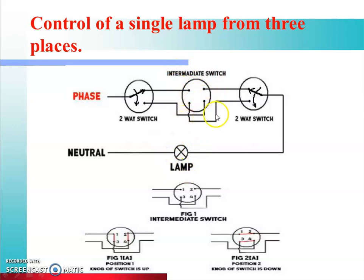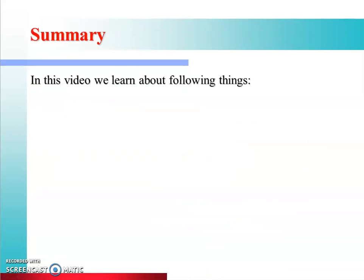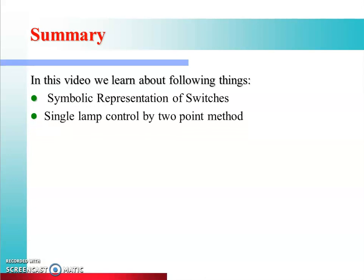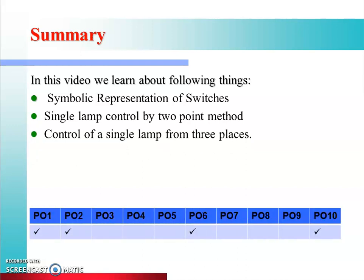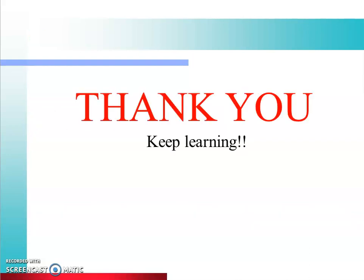The intermediate switch plays the most important role — according to its position, we can control the lamp from three places. So in this video we learned about symbolic representation of switches, single lamp controlled by two-point method, and control of a single lamp from three places. These are the key points for today's lecture. Thank you and keep learning.